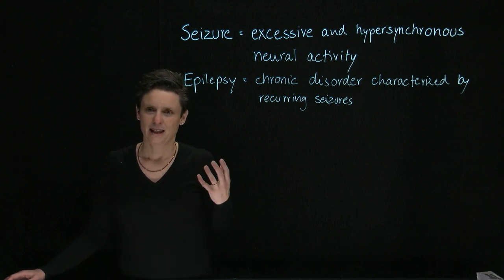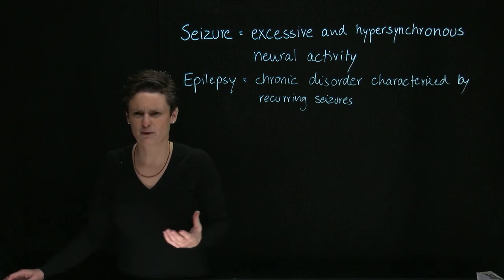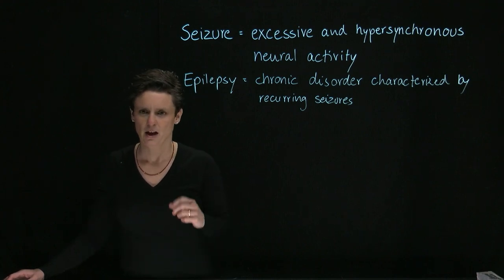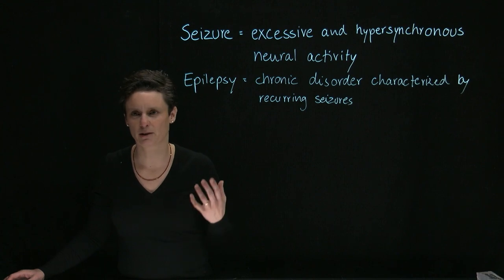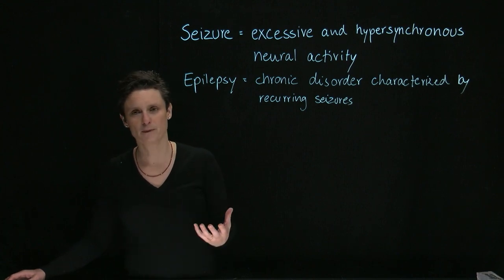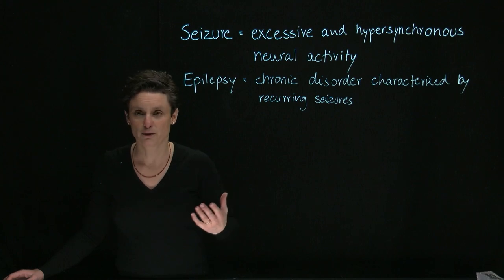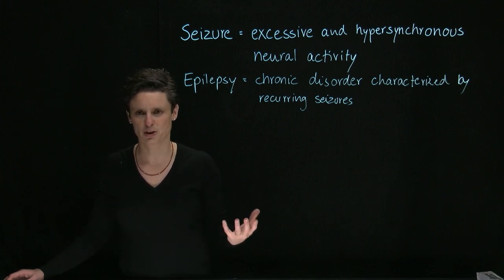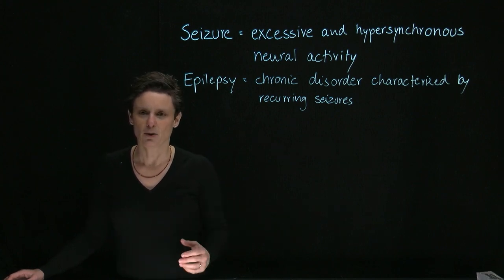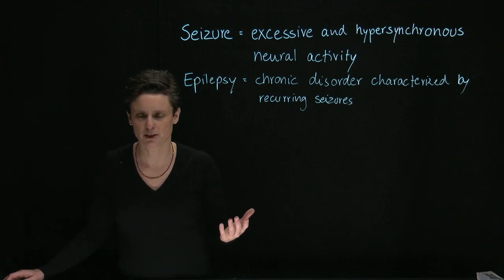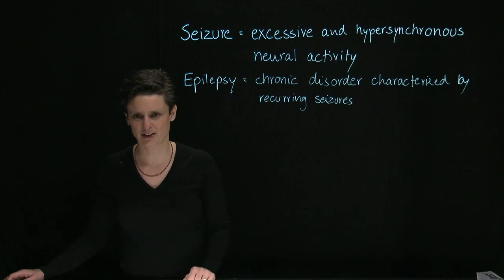Now, you can imagine that a patient that experiences a seizure can have very different symptoms and it all depends on where is the seizure. So for example, if the seizure is in the frontal lobe where movements are controlled, you can imagine that the patient might have some sort of motor problems or motor symptoms. Now if the seizure happens somewhere else in the brain, the patient might have very different symptoms. So it all depends on the location.